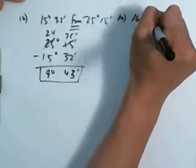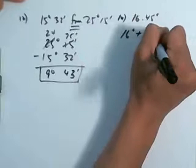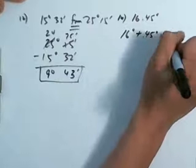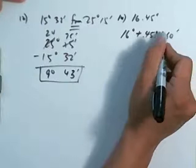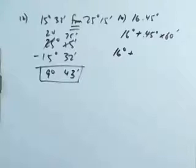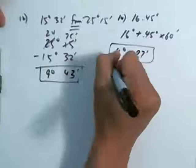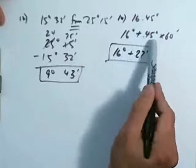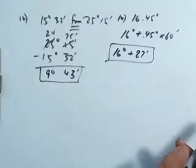Number 14: convert 16.45 degrees into degrees and minutes. It's going to be 16 degrees plus 0.45 degrees converted to minutes. How do you change that into minutes? You just take 0.45 and multiply it by 60 — there are 60 minutes in a degree. Using a calculator, 0.45 times 60 is going to be 27 minutes. So the answer is 16 degrees 27 minutes. Every time you're trying to convert decimal form into minutes, take the decimal part and multiply it by 60.